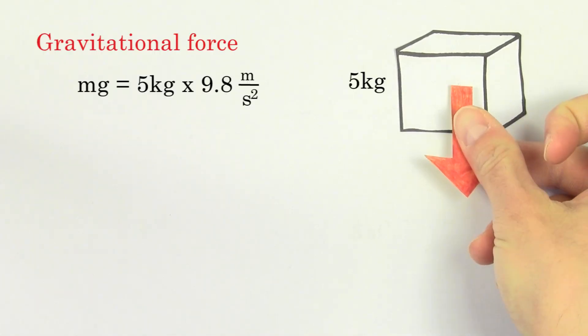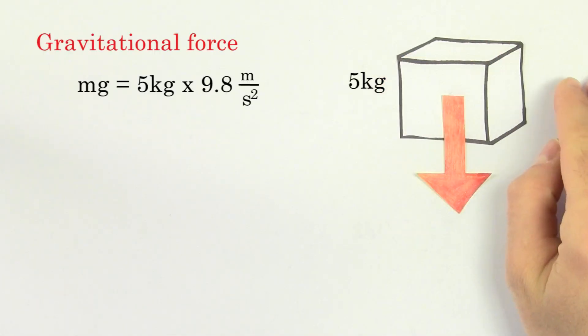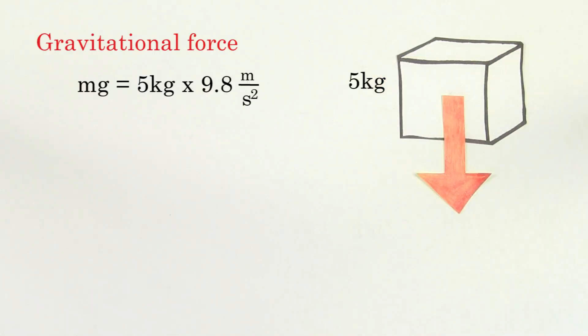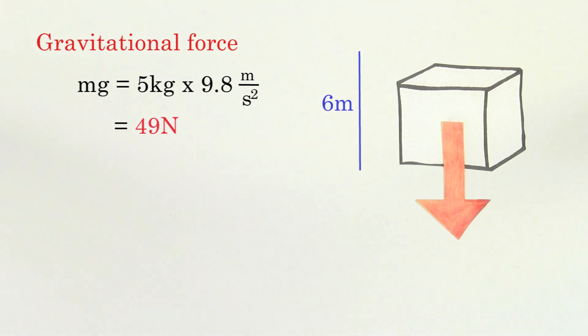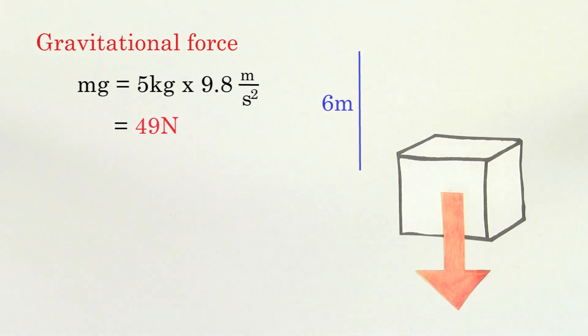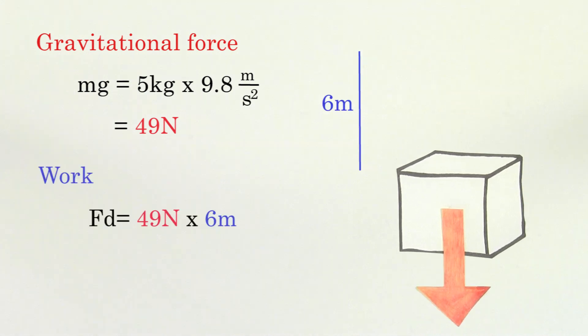For instance, the gravitational force on a 5 kilogram mass is 49 newtons. If the mass moves downwards by an amount of 6 meters, the work done by gravity is going to be 294 joules.